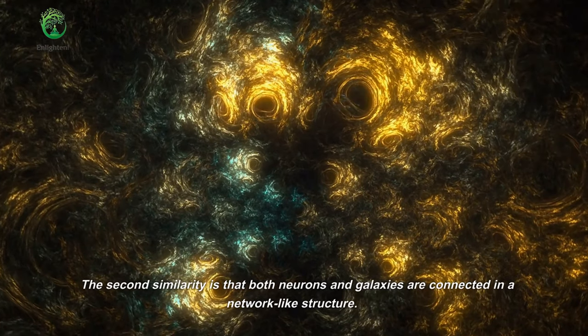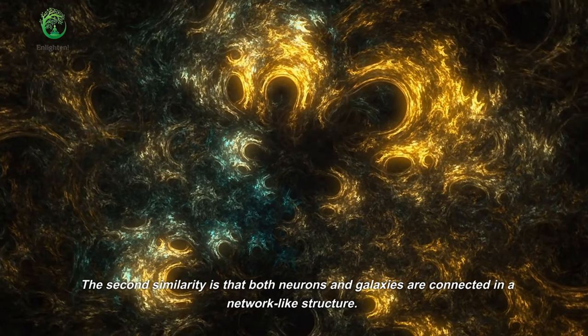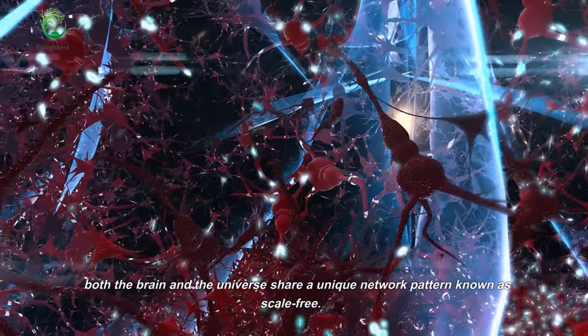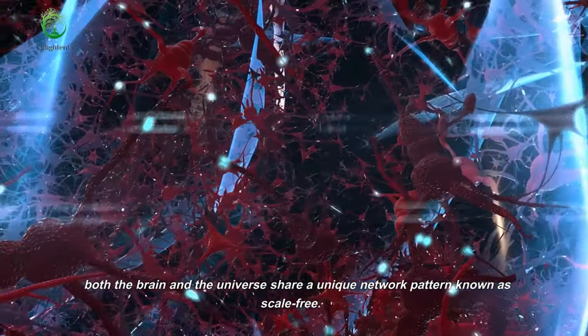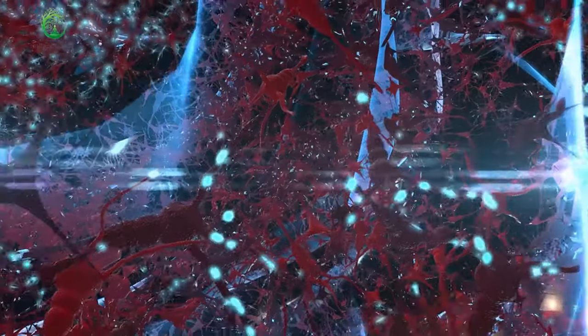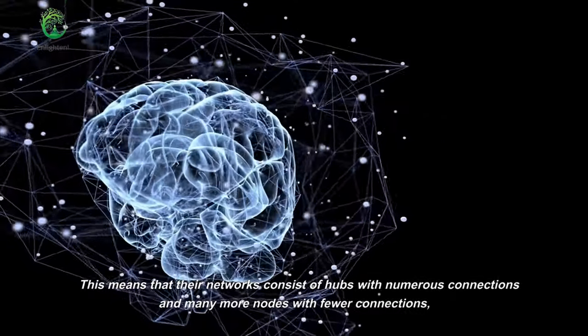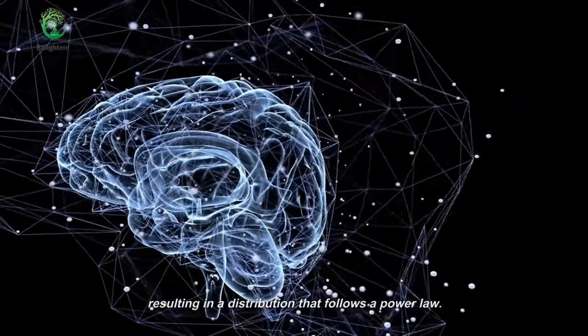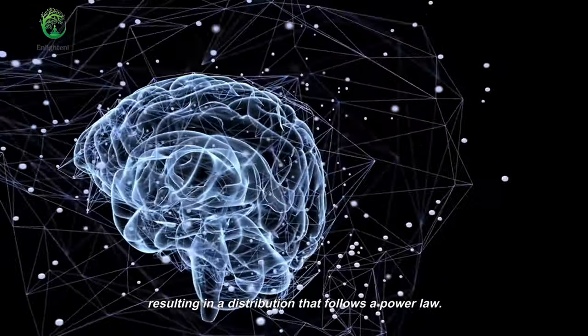The second similarity is that both neurons and galaxies are connected in a network-like structure. Both the brain and the universe share a unique network pattern known as scale-free. This means that their networks consist of hubs with numerous connections and many more nodes with fewer connections, resulting in a distribution that follows a power law.